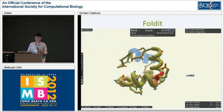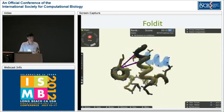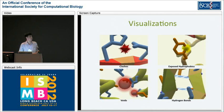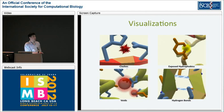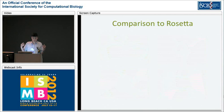Foldit players can form teams, and then they can share their solutions as well as their strategies with their teammates and with other players. There are many visualizations we've added to the game because not all gamers have a background in biochemistry. For example, these represent clashes between atoms, here we show voids in the protein, this greasy ball means this is an exposed hydrophobic, and these are hydrogen bonds. One of the questions we wanted to answer was how human pattern recognition and puzzle-solving skills could compare with the Rosetta automated protocols.